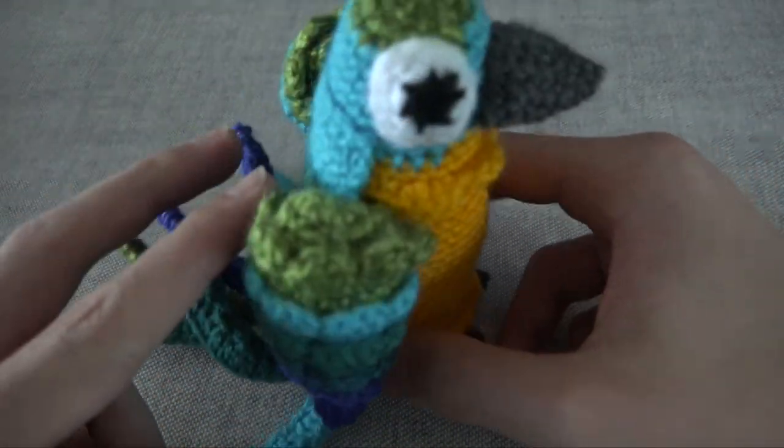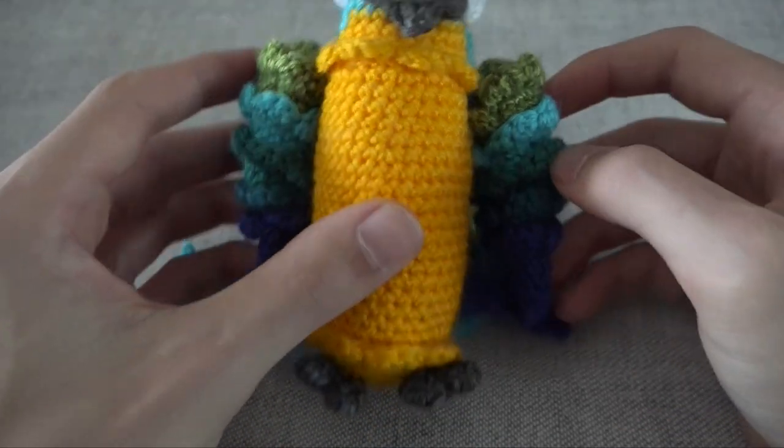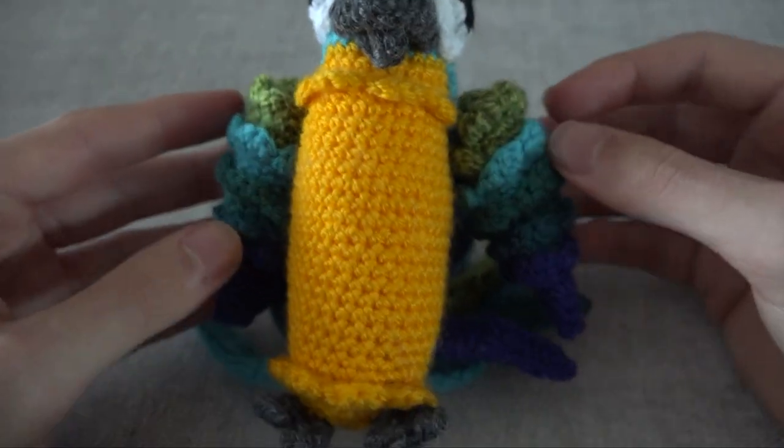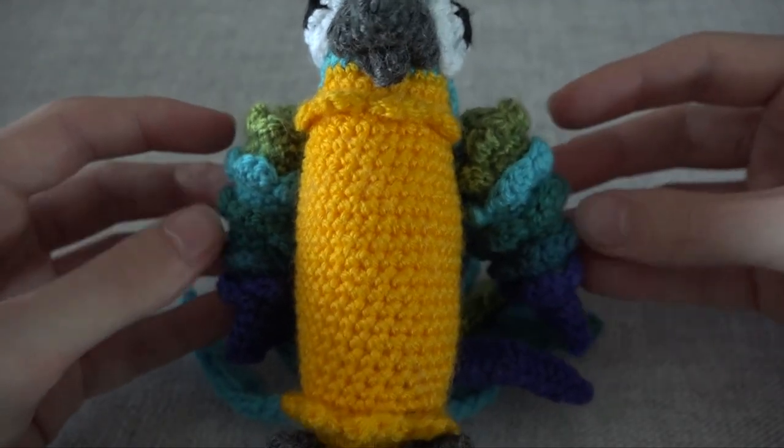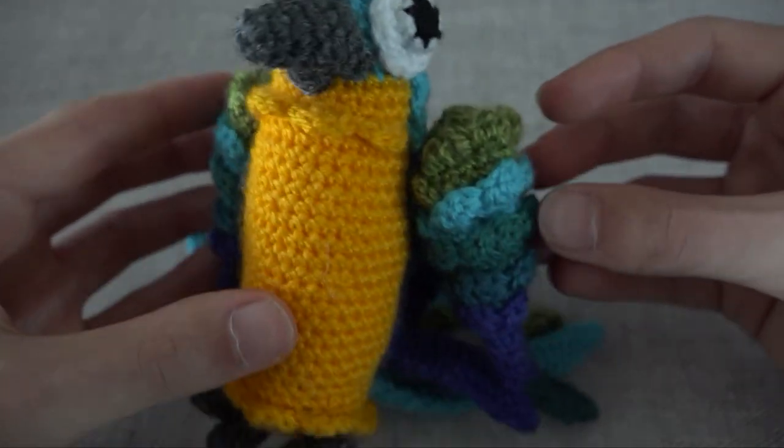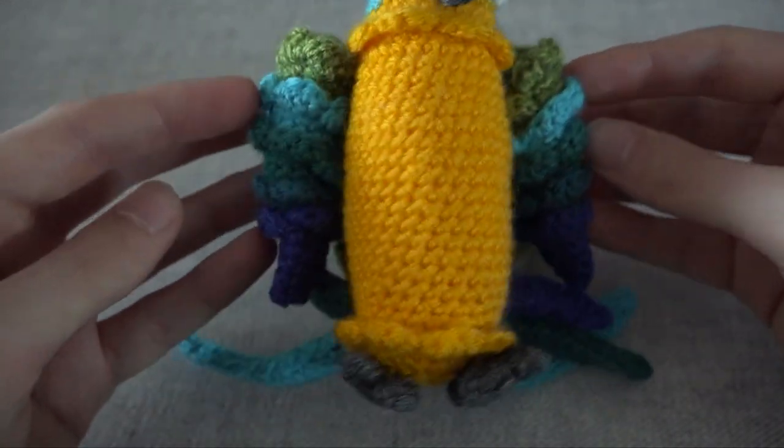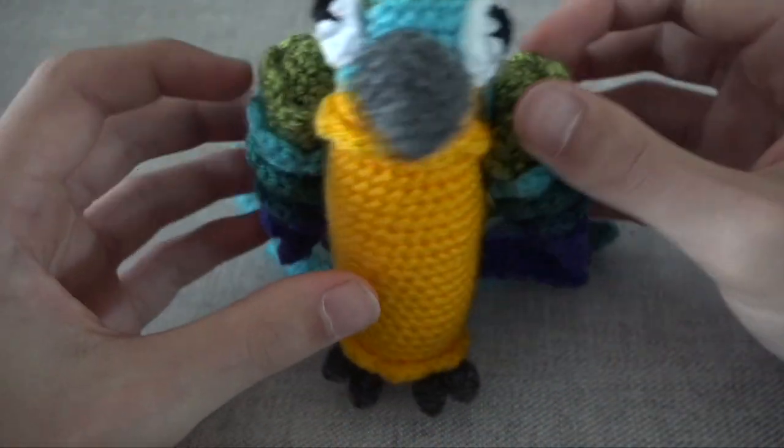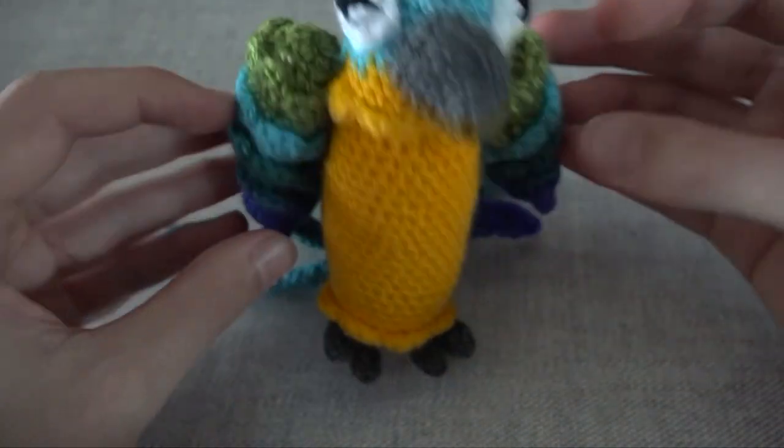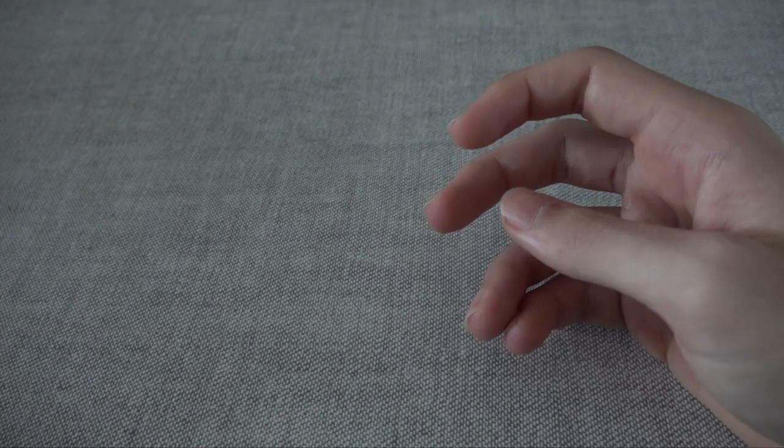And finally in September, I also made this parrot, also from the Zumigurumi book. And I think his wings are a bit too broad, like he looks a bit muscular, which wasn't really the point, but it could be worse. Overall, I really like this design, and especially all the tail feathers and the colors. I really love it. And that was everything I made in September.